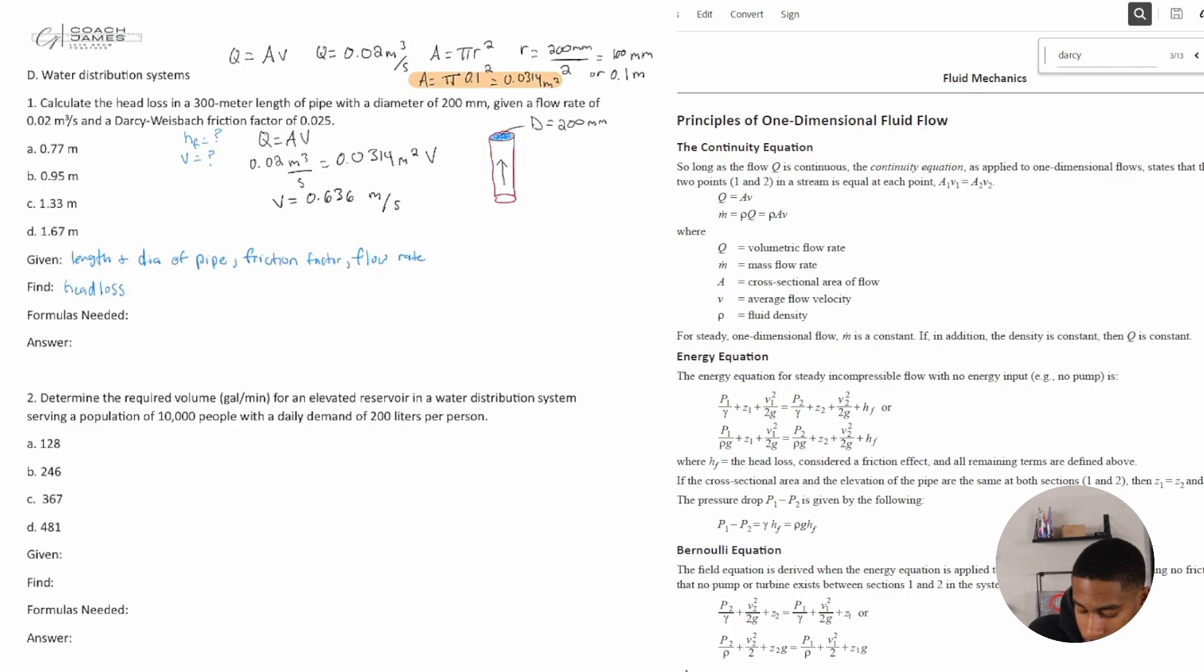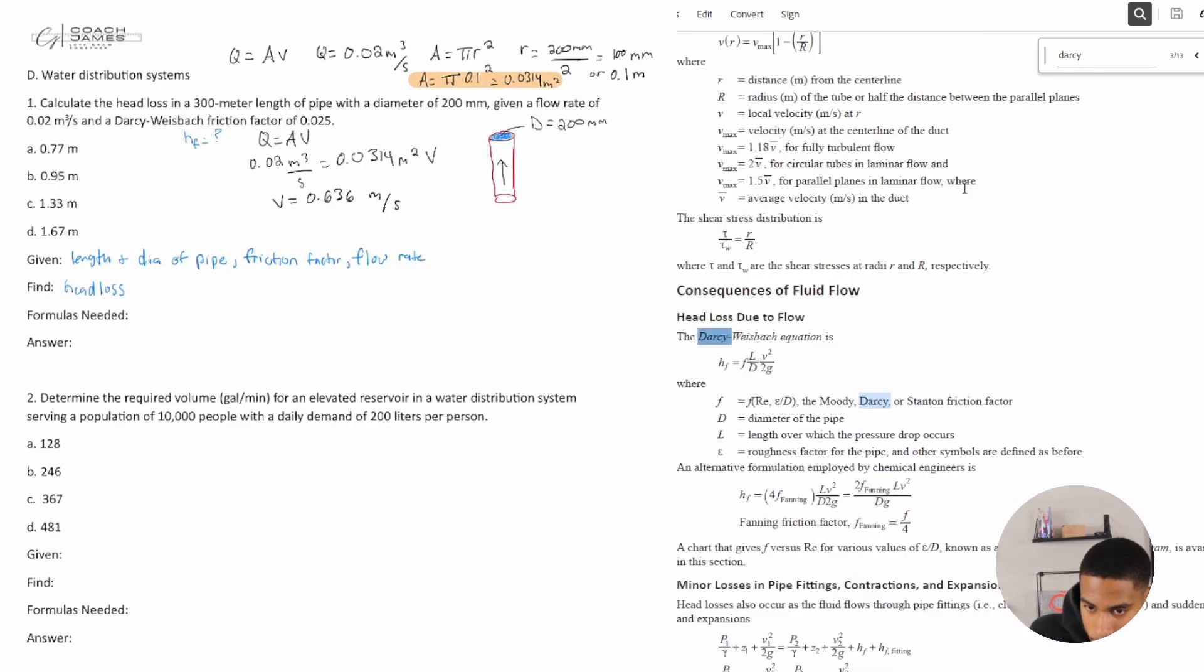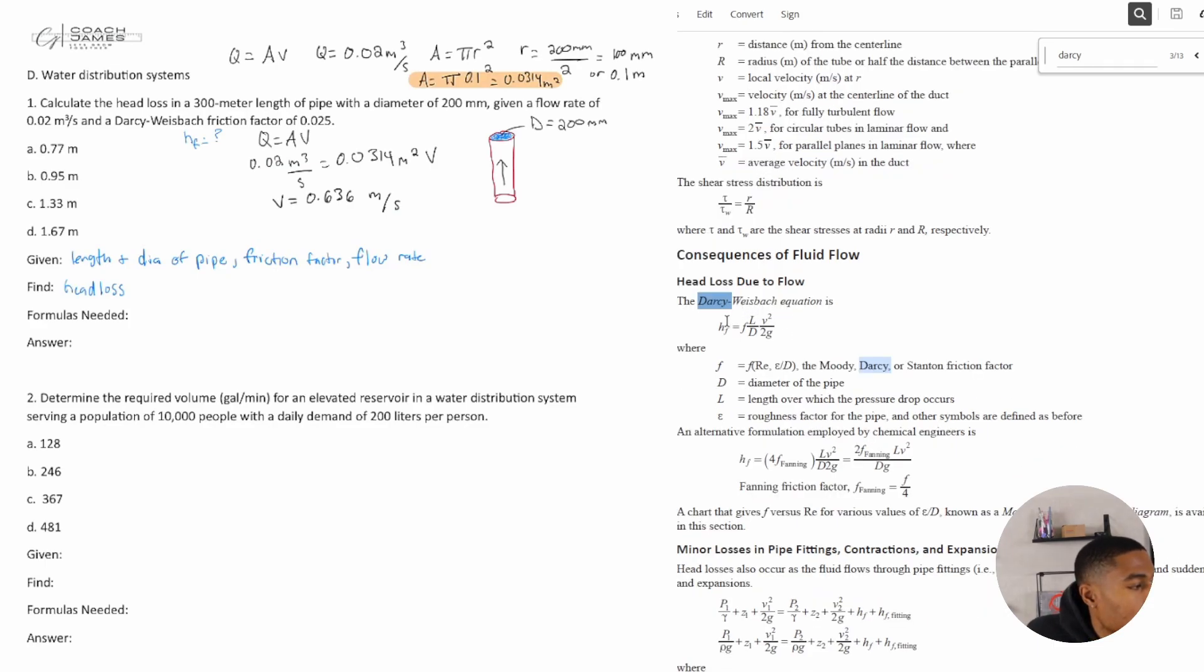All right, so let's go back—we can say we know what v is. So h_f, which is head loss, it's the only thing we don't know. Let's see if we can get back to that equation: head loss due to flow. Yep, it's the Darcy-Weisbach equation. So we'll write it out and we will get our answer.